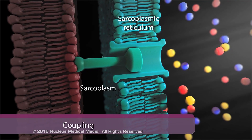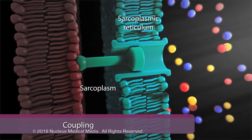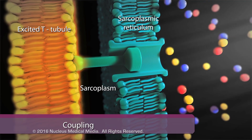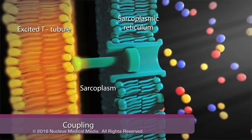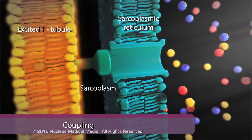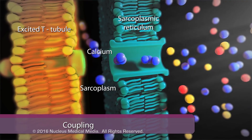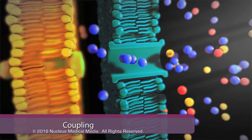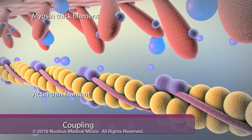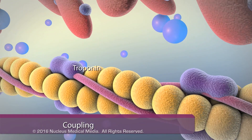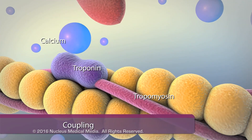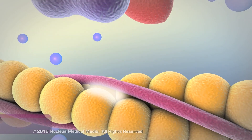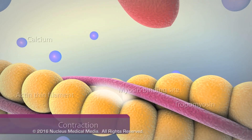The second step is coupling, wherein the action potential depolarizes the T-tubules. Channels in the sarcoplasmic reticulum release calcium into the sarcoplasm. Along the myofilaments, troponin binds calcium and separates from tropomyosin.